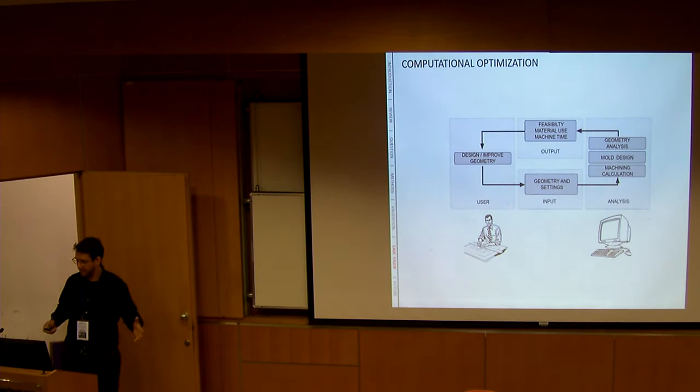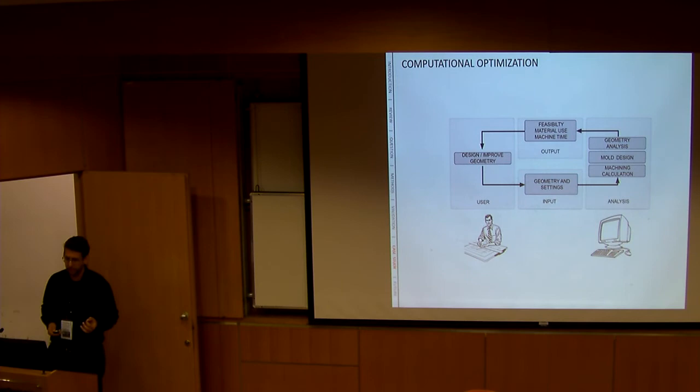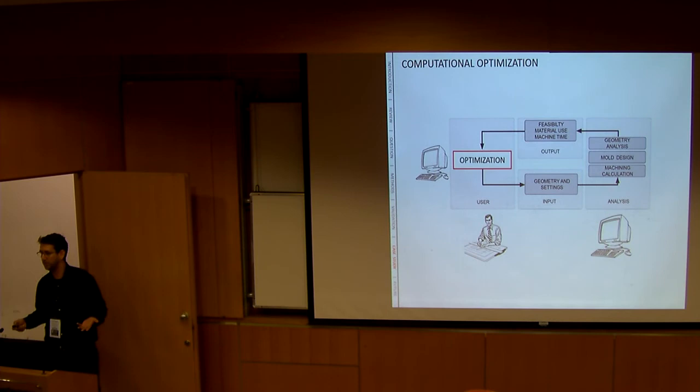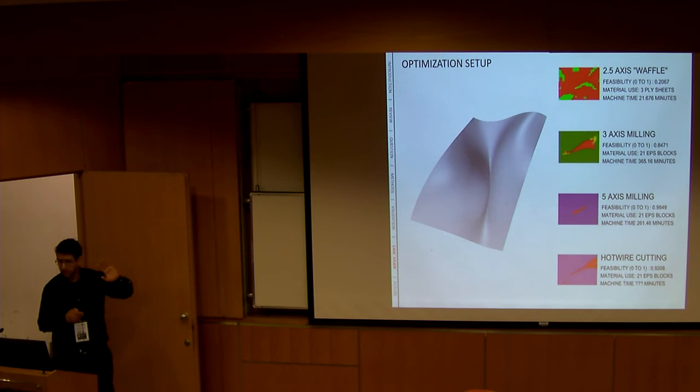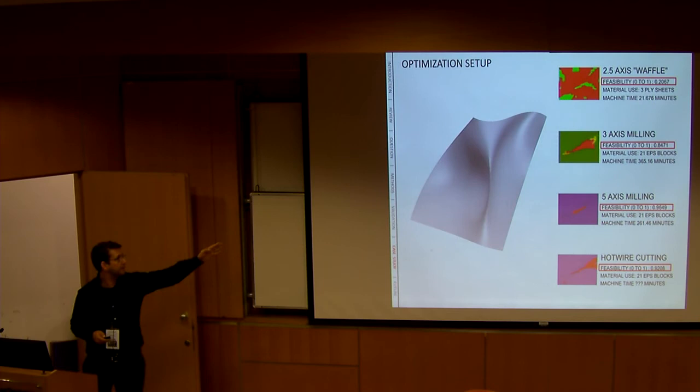So it kind of works. And everybody's happy. And then, okay, so what if I want to improve this process a bit more? And instead of me changing the geometry according to the algorithm, I'll have the computer change it for me and fix it. So it's called optimization, this process.